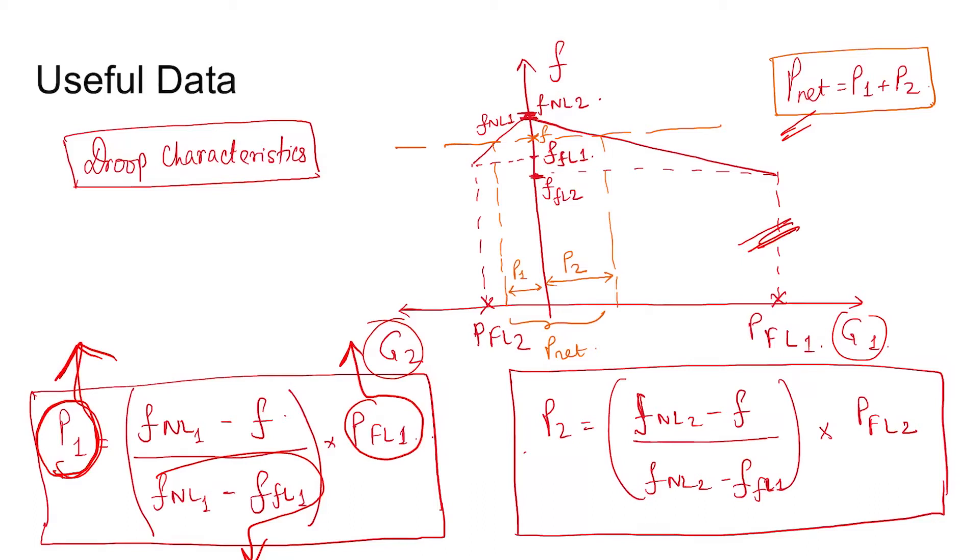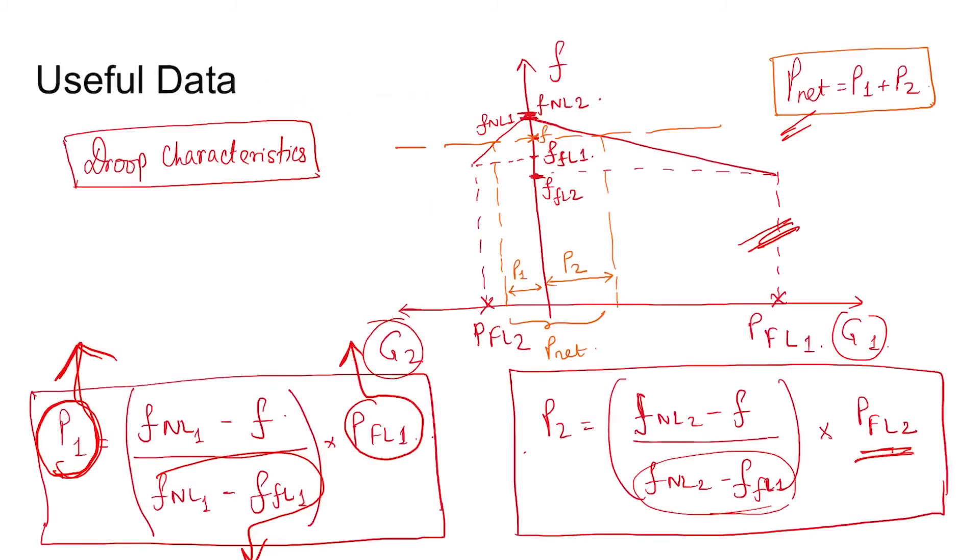P2 is no load frequency two minus the final frequency divided by no load minus full load frequency into capacity, full load capacity of generator two. P_net is specified as 500 megawatts.